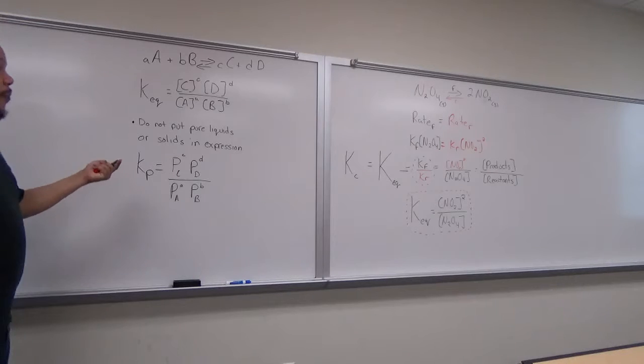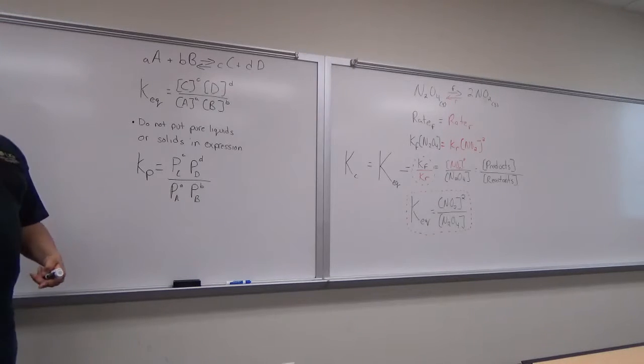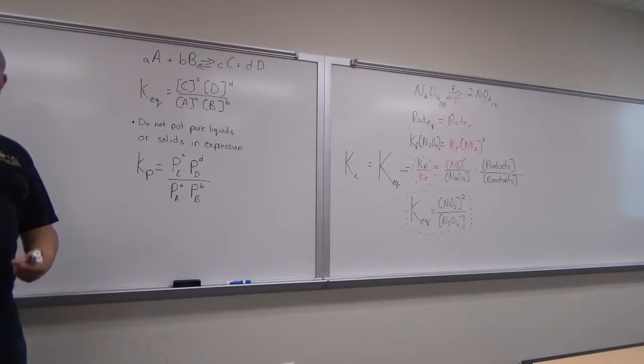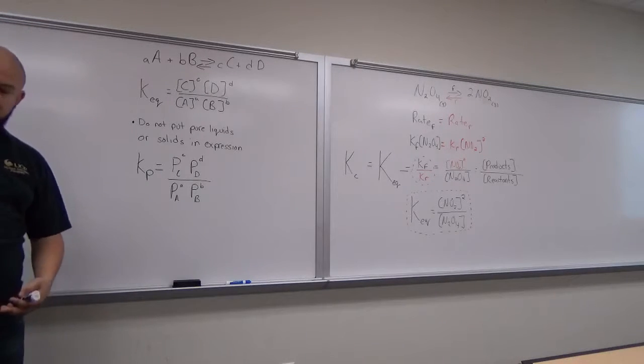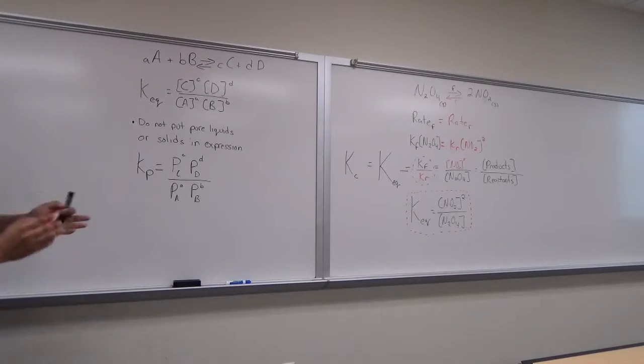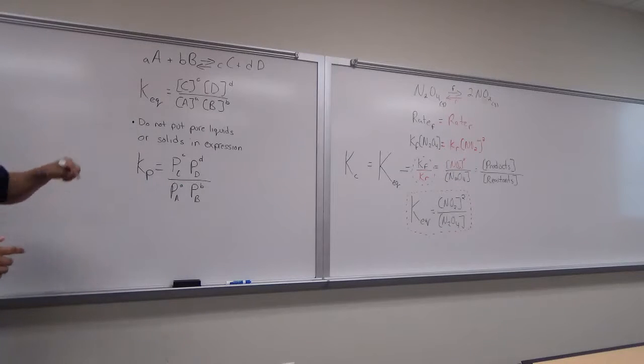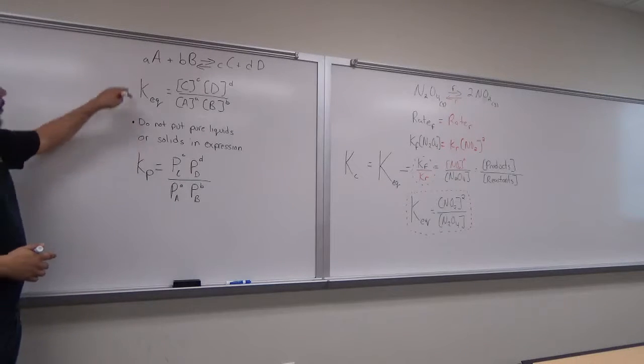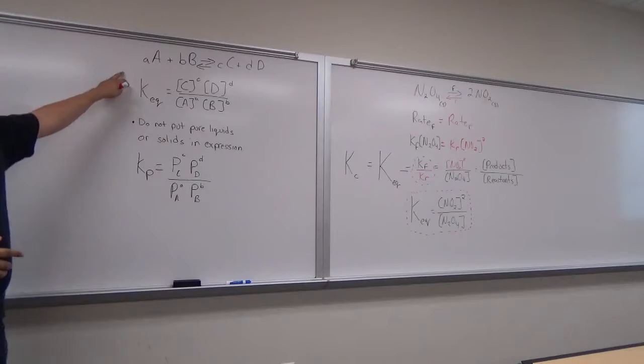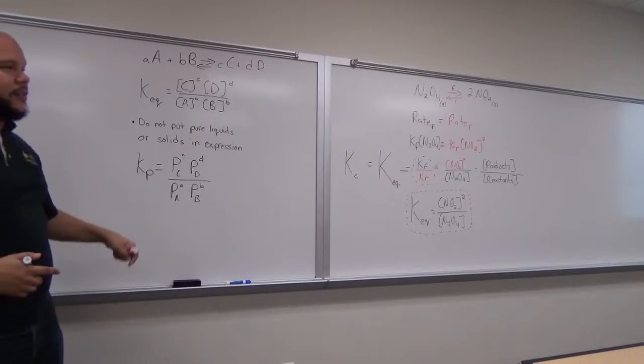Pressure is also proportional to temperature. So if you hold temperature constant, PVnRT doesn't really shift. These two numbers — Kp and Kc — are not always the same.